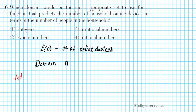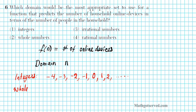Let's start with integers. Think about integers as whole numbers and their opposites — negative 4, negative 3, negative 2, negative 1, 0, 1, 2, and so on. Whole numbers are positive integers, a subset of integers. Whole numbers are just 0, 1, 2, 3, on and on.